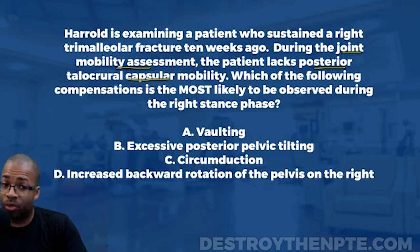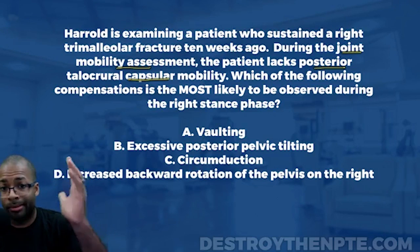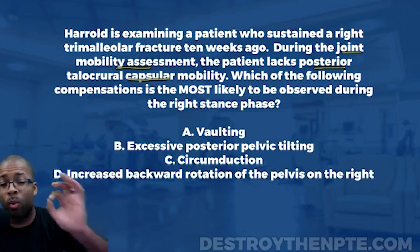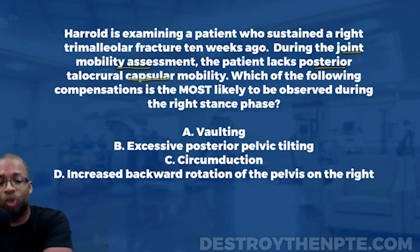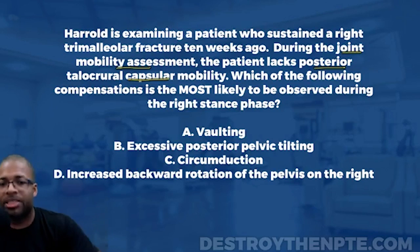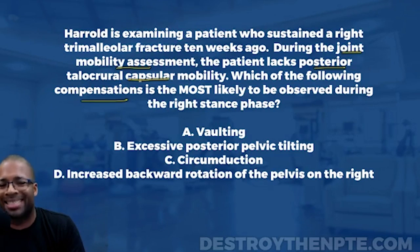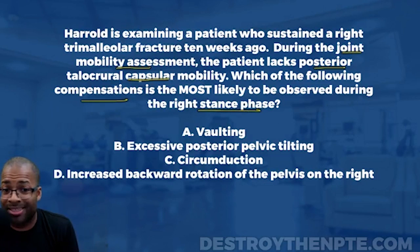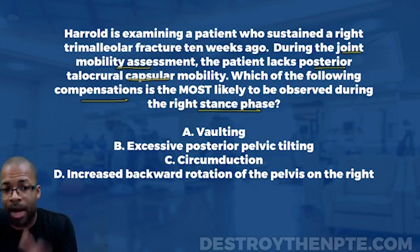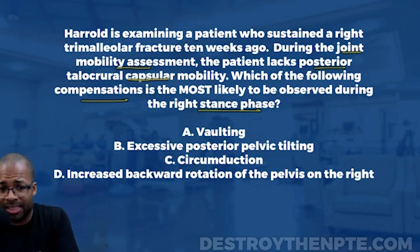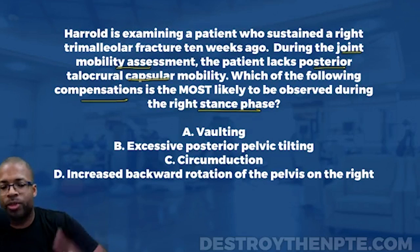If a person lacks posterior capsular mobility, that is going to limit dorsiflexion. So what do we know? Our patient has limited dorsiflexion — that's the big key. The question asks which compensation is most likely observed during the right stance phase, so we need to be asking ourselves: what type of compensations would we see with a patient who lacks dorsiflexion, specifically in stance phase?